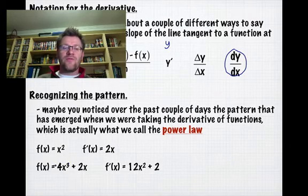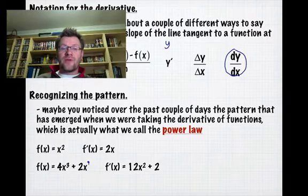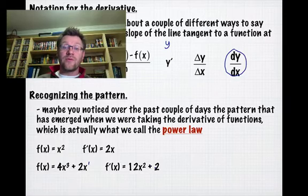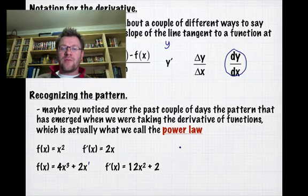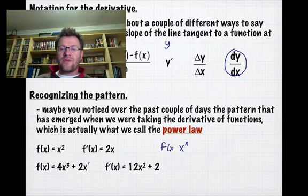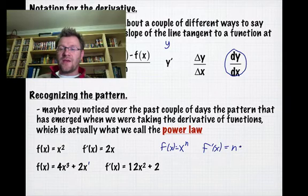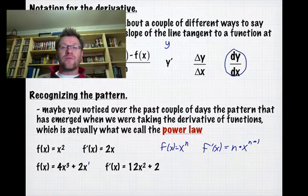Here, if we take the 3 and move it in front, that becomes 12 (3 times 4), and we subtract 1 from the exponent, becoming squared: 12x². The 2x term has an implied exponent of 1. Bringing down the exponent gives 2 times 1, and subtracting 1 from the exponent gives x⁰ = 1, so we get 2. This is the power law: if f(x) = xⁿ, then f'(x) = n·x^(n-1). We bring the exponent down in front and subtract 1 from the exponent.